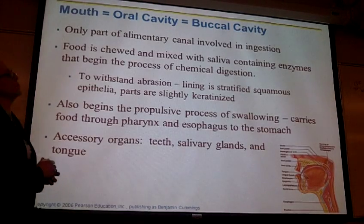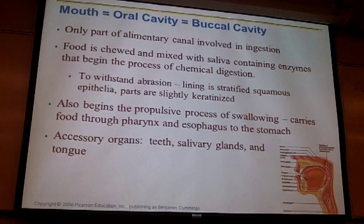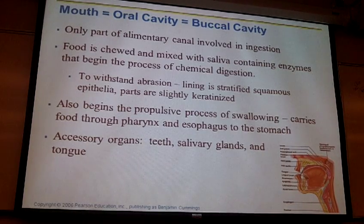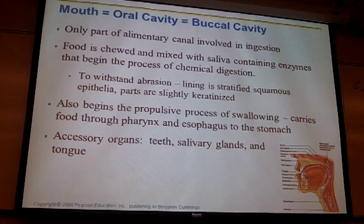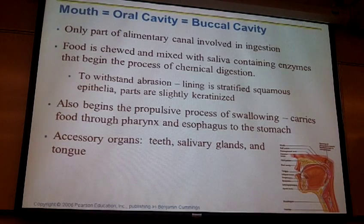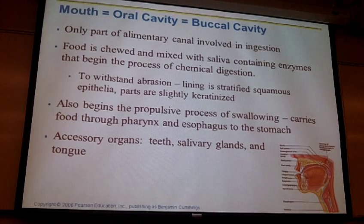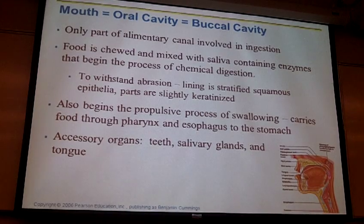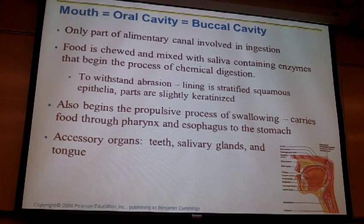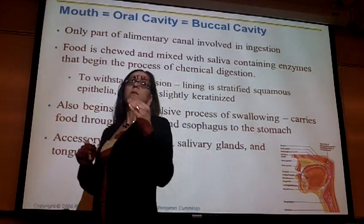We want to start at the mouth and work our way down, focusing on what happens in each particular area and what allows those particular functions to occur. We definitely want to keep in mind where we break down our various nutrients — where we're chemically digesting carbohydrates, fats, and proteins — what enzymes chemically digest those macromolecules, and where we're absorbing nutrients.